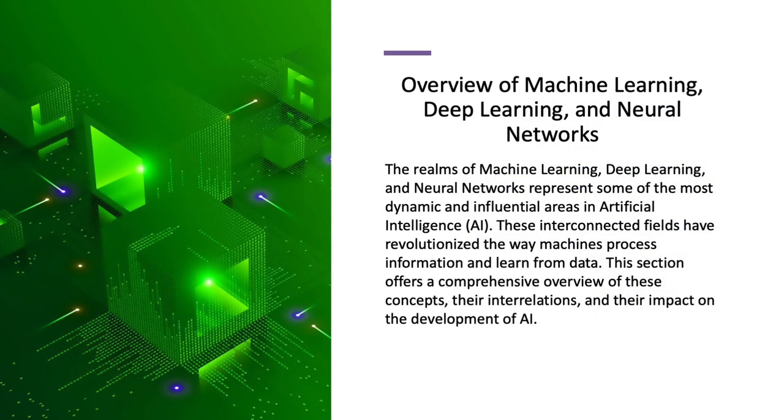The realms of machine learning, deep learning, and neural networks represent some of the most dynamic and influential areas of artificial intelligence. These interconnected fields have revolutionized the way machines process information and learn from data. This section offers a comprehensive overview of these concepts, their interrelations, and their impact on the development of AI.